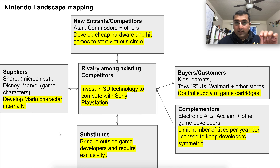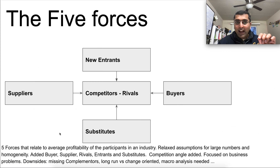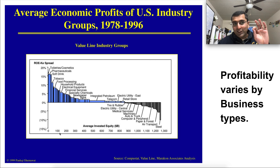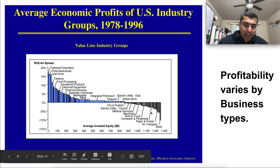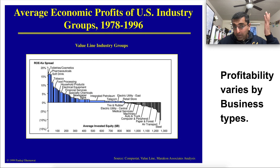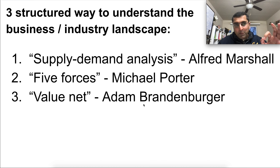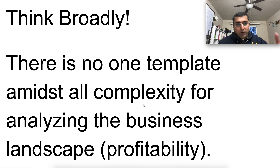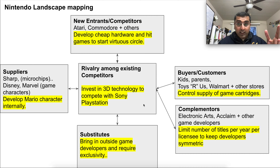Remember, the goal is maximum profitability — how do you, within your industry, get to the highest point of profitability? Overall maximum profitability is achieved through structured thinking: supply-demand analysis, five forces, value net, and building the landscape. The Nintendo example illustrated how to do it — though it's worth noting that Nintendo actually struggled against Sony PlayStation.